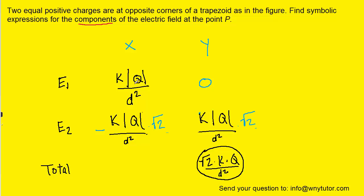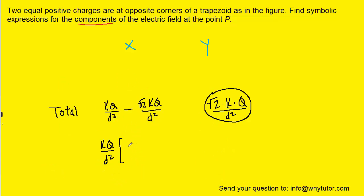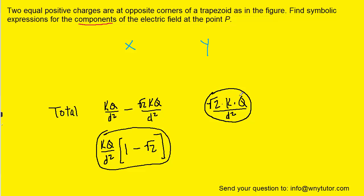The x component is a bit trickier. We add the first x component to the second one. Since we're adding to a negative quantity, we subtract them. Factoring out kQ/D² from both terms, we are left with kQ/D² times (1 − √2). This is the final symbolic expression for the total x component, and √2·kQ/D² is the total y component.